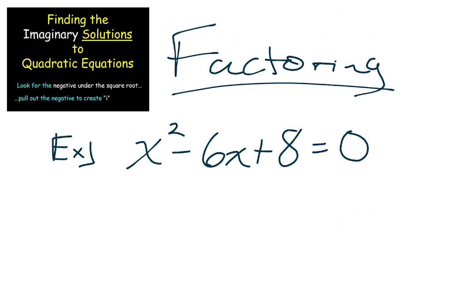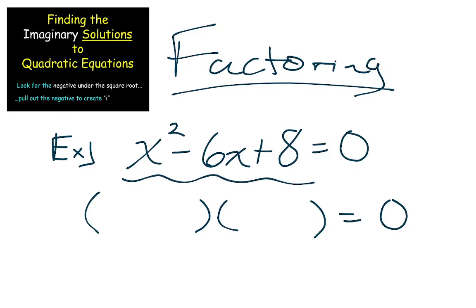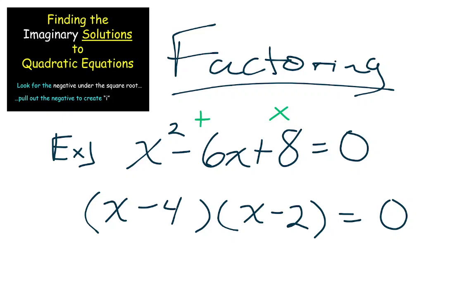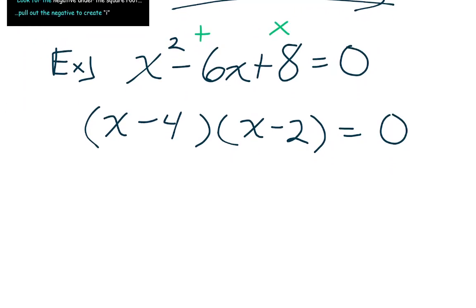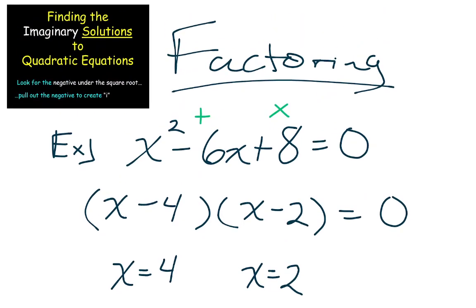What about factoring? That was definitely one of the strategies we used earlier this chapter. Factoring only works when there are real numbers that produce your trinomial. Two numbers that multiply to 8 and add to negative 6 would be negative 4 and negative 2 — those are real numbers. There's nothing imaginary about x equaling 4 and x equaling 2. The point: if you can factor a problem, it's not going to end up with imaginary numbers. But you still can use factoring when it works — why wouldn't you?